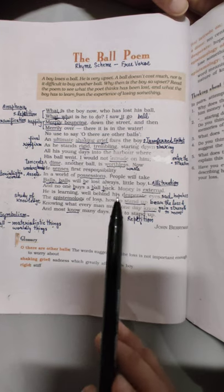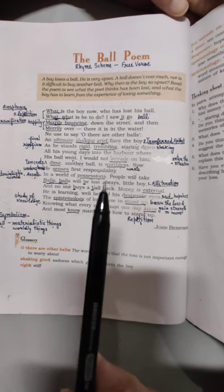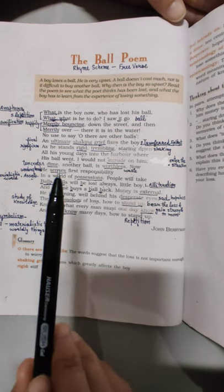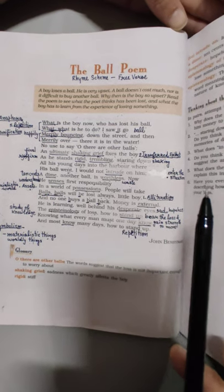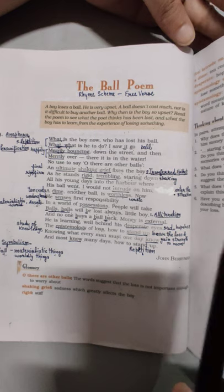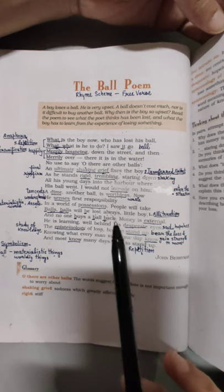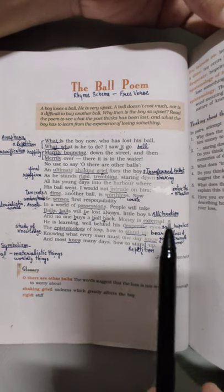This is a very simple poem as you can guess from its title. Title ko padhke aisa lagta hai ki ball ke baare mein poem hai bade easy hogi. Lekin iske peeche jo theme hai, jo iske peeche message jo chipa hua hai, that is very deep.